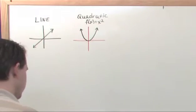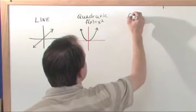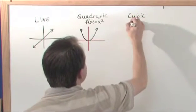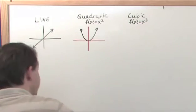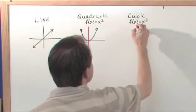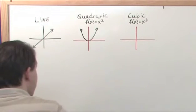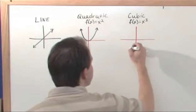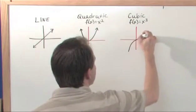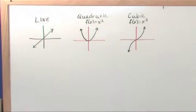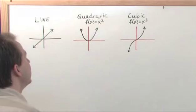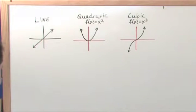Now your basic cubic — which would be something like f(x) = x³, that's why we call it a cubic — basically looks like this. Here's your x and y, and your basic cubic is going to look like this. It's going to go up and over like this. We've actually graphed each of these in the previous section, so you kind of know where they come from. This is just a review because we're going to end up shifting and scaling these.